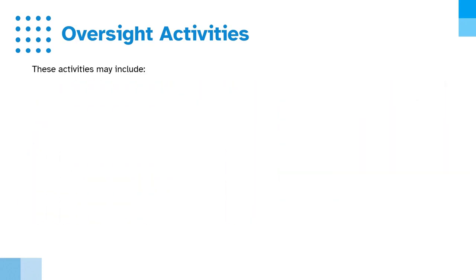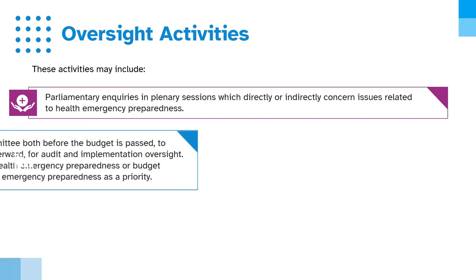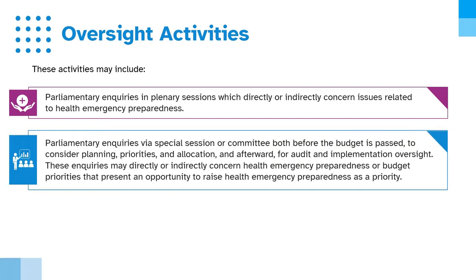These activities may include parliamentary inquiries in plenary sessions, which directly or indirectly concern issues related to health emergency preparedness; parliamentary inquiries via special session or committee, both before the budget is passed to consider planning priorities and allocation, and afterwards for audit and implementation oversight. These inquiries may directly or indirectly concern health emergency preparedness or budget priorities that present an opportunity to raise health emergency preparedness as a priority.